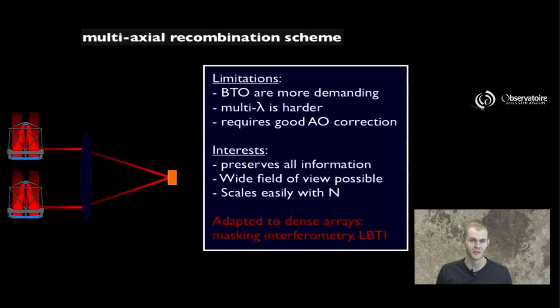Just like in the coaxial case, there are some pros and cons for one such configuration. The first limitation is that the beam transportation optics are more demanding, because we want to preserve the small scale and the large scale information in there. And multiple wavelength observations are trickier, harder to reach. Since we care for the low-order spatial frequency features of the target, then we typically require the telescopes to have a better overall wavefront correction. So we are going to use adaptive optics in this case.